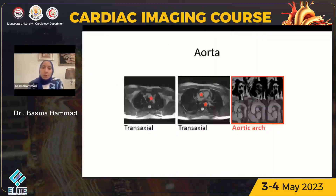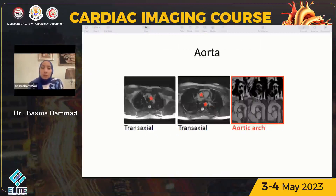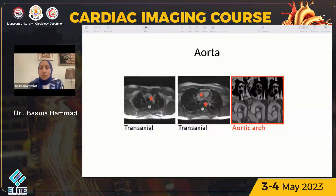If you suspect aortic root, ascending aorta dilatation, or coarctation, you need to plan further images for proper assessment of the aorta. Relying on the transaxial stack alone will cause you to miss the diagnosis because of inter-slice gaps. So what we do is localize the arch in the transaxial view, marking the ascending and descending aorta. From these three points, we plan a nice aortic arch image, clearly showing the arch, ascending aorta, and if coarctation is suspected, also the great vessels and any vascular abnormality.